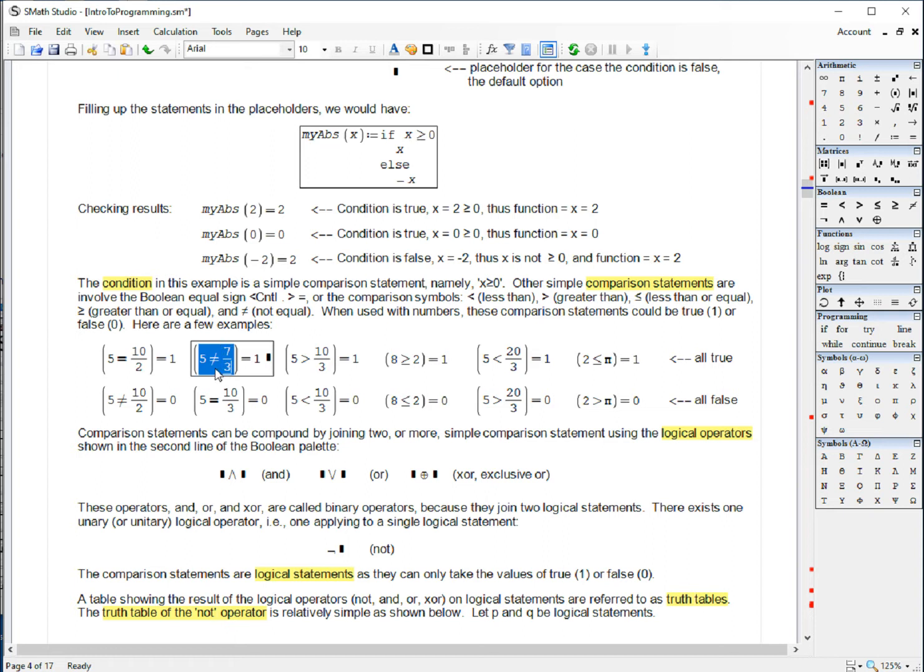You can have, like, is five not equal to seven-thirds? That's true. Is five greater than ten-thirds? That's true. Is eight greater than or equal to two? True. Is five not equal to ten over two? False. They are equal. Is five equal to ten-thirds? False. And so, you get either a one or a zero as true or false.